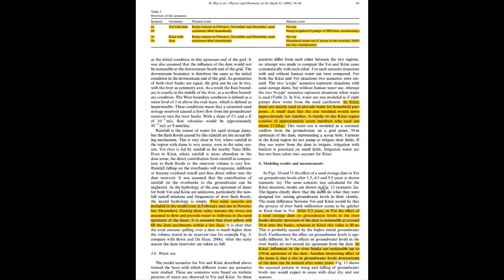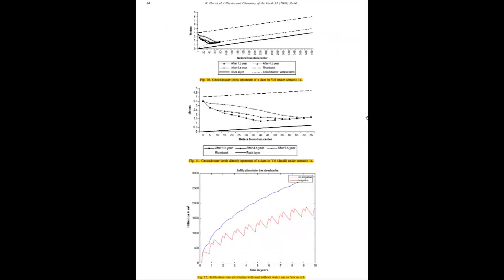We look at Figure 10 and 11—this is for Voi. It's important to understand these are cross sections, not longitudinal sections. This is what happens outside the riverbed, away from the dam center. Figure 11 is a zoom in. You notice it takes quite a while for water to move into the riverbank—after nine and a half years, it moves about 75 meters or so.